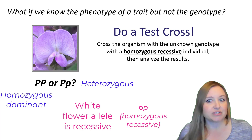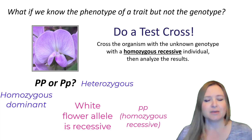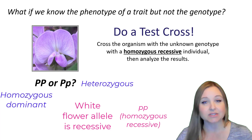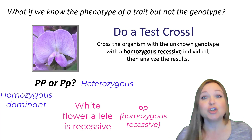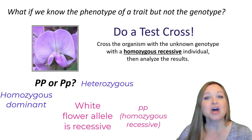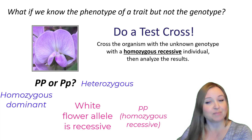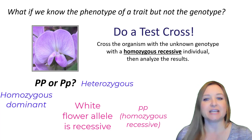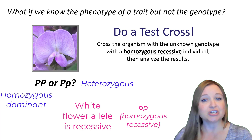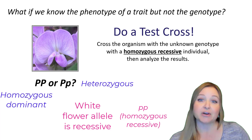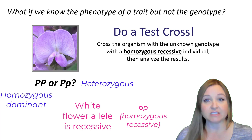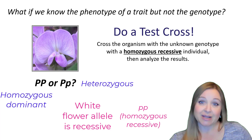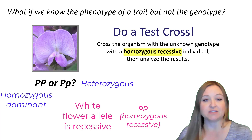You might wonder: why use a homozygous recessive plant rather than a heterozygous one? Well, because it's white flowering, just by looking at it you know you have a homozygous recessive individual. And because it has two recessive alleles, if white flowers show up in the next generation, then this parent purple plant must have also carried a recessive allele. So with a test cross, you always cross your unknown genotype organism with a homozygous recessive individual.